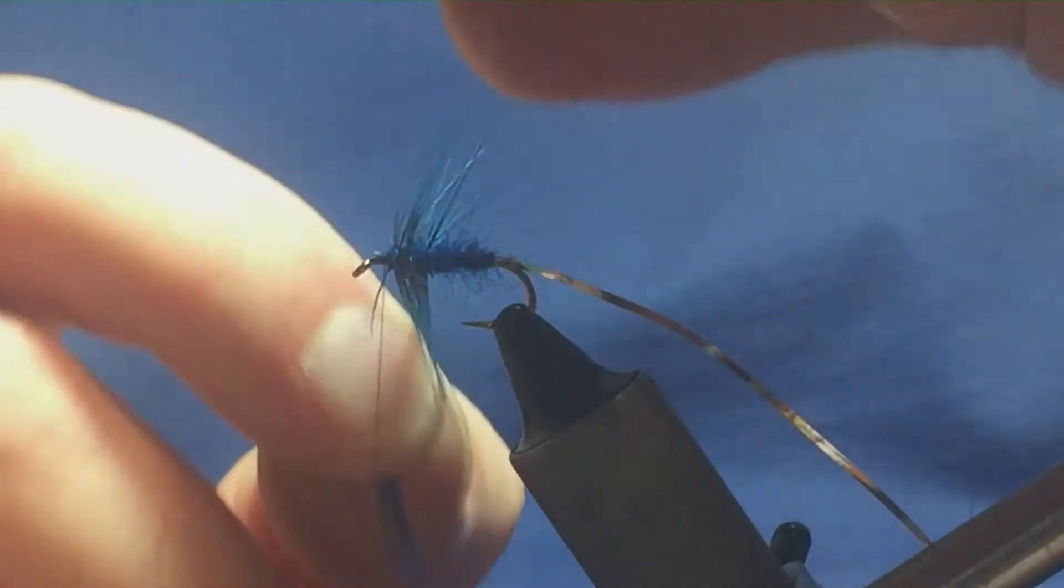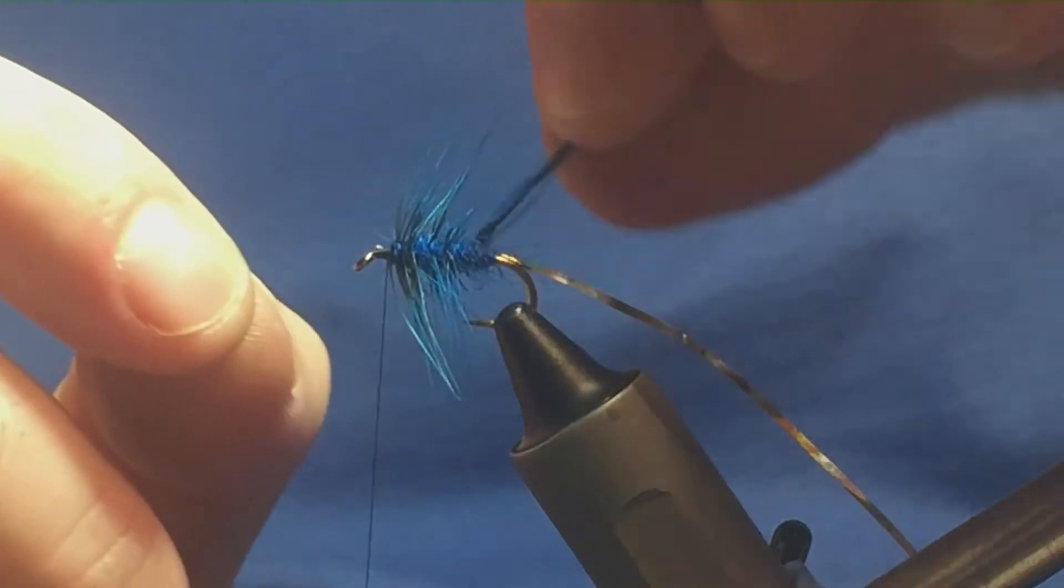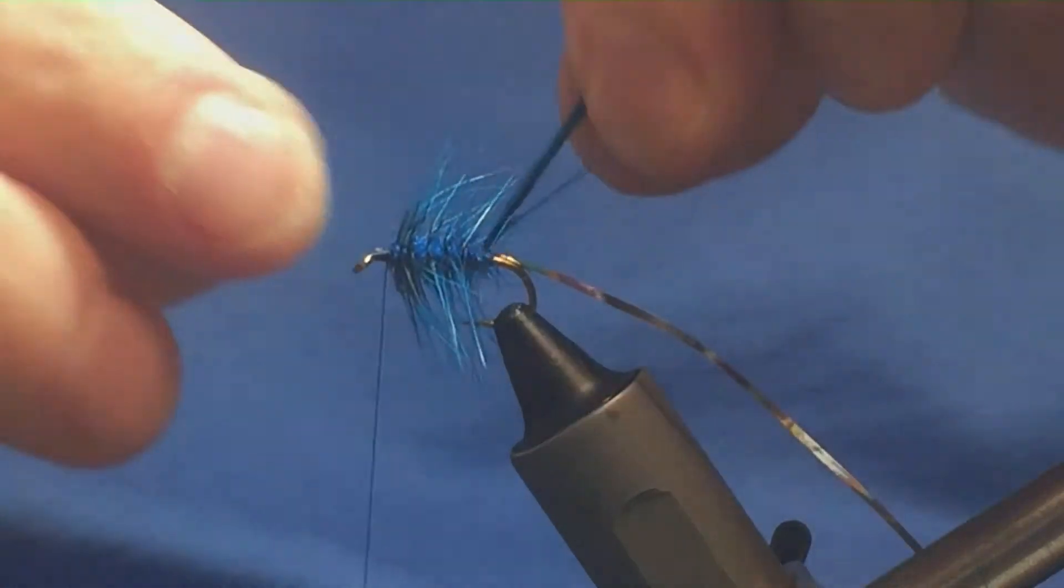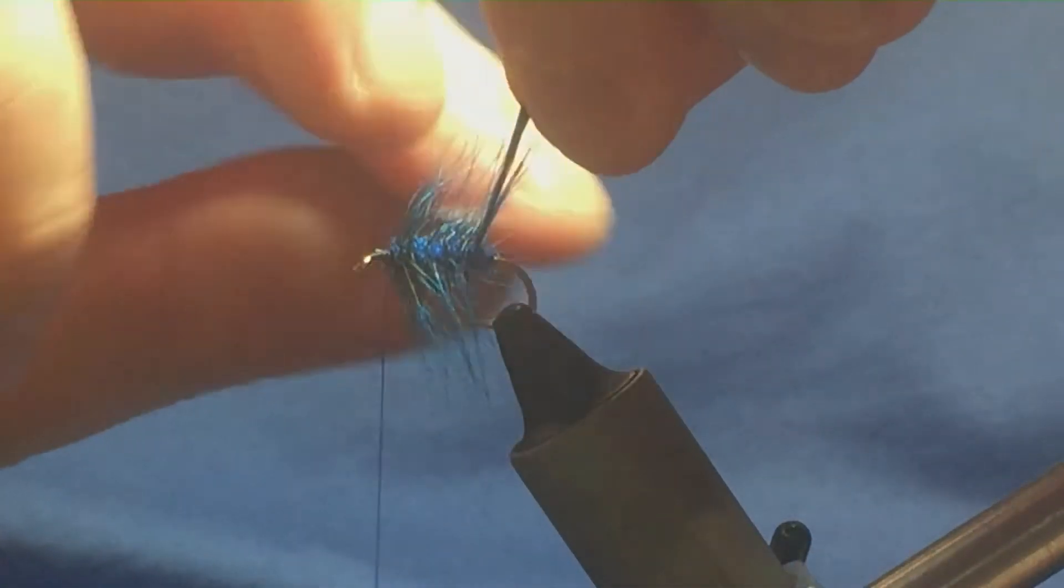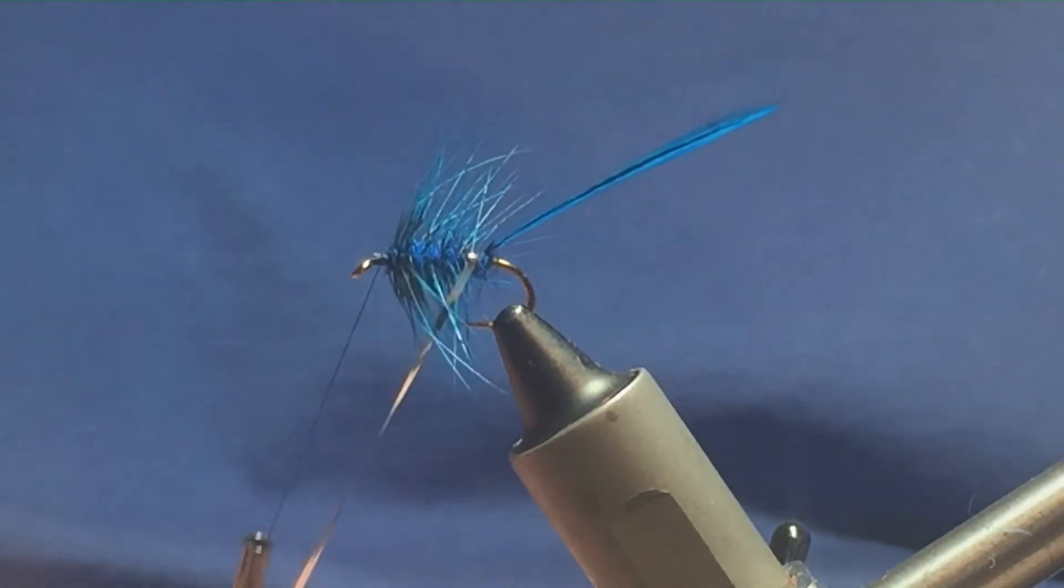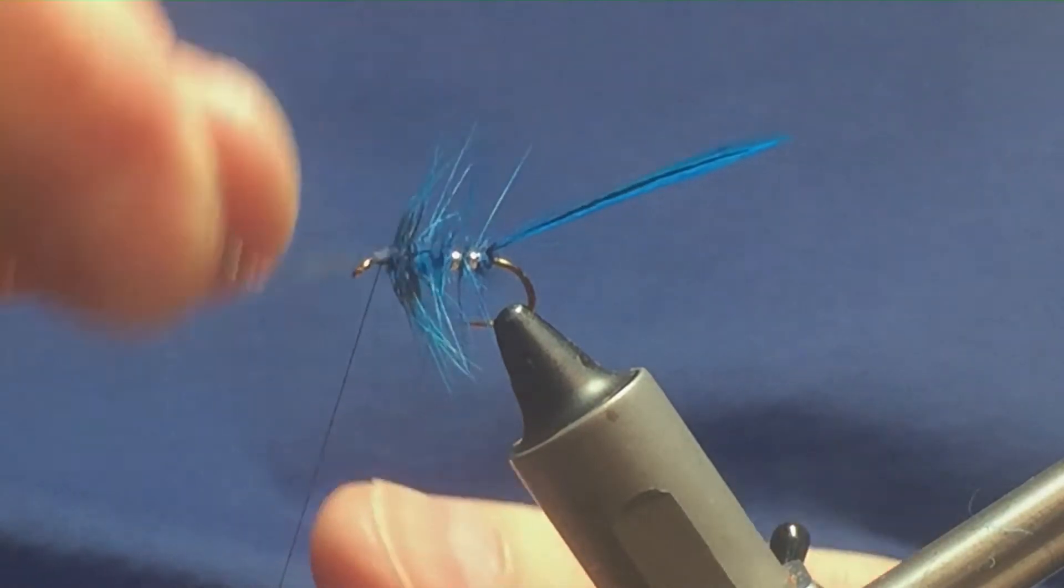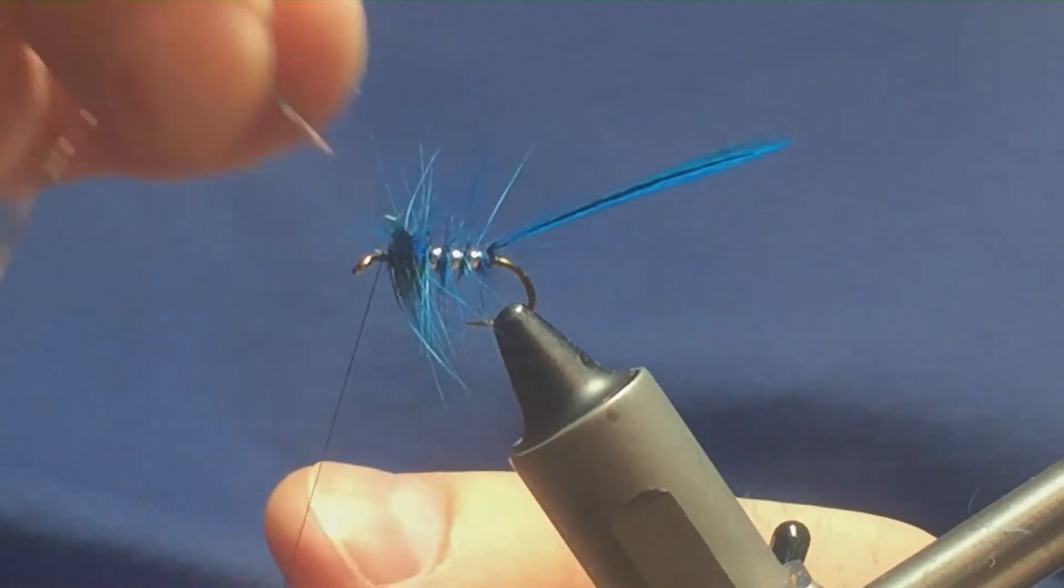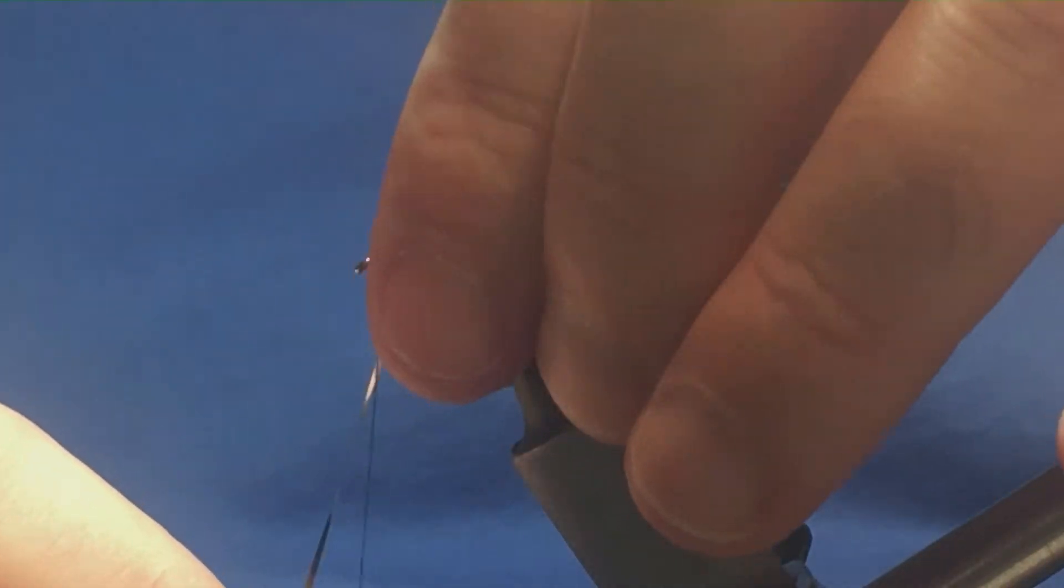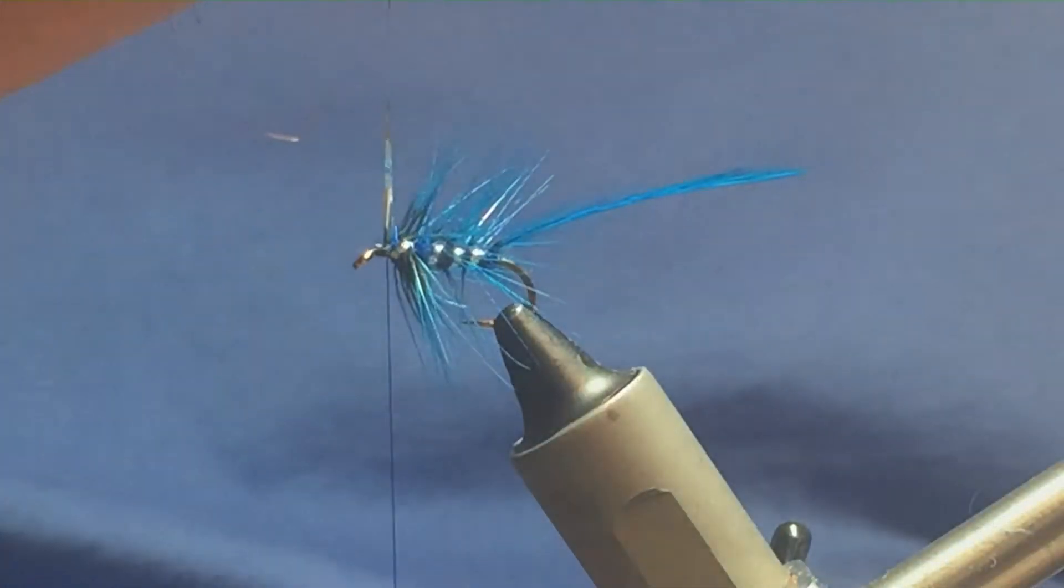and then just bring the remainder of the hackle down the body. Get three or four turns - I got three in coming down the body. Then just come round with your silver tinsel, and then you're taking four turns of your silver tinsel up the body. Anything that wants to go forward, just come in and stroke it back. Bring